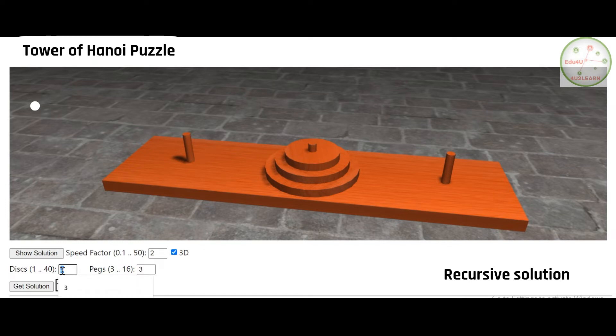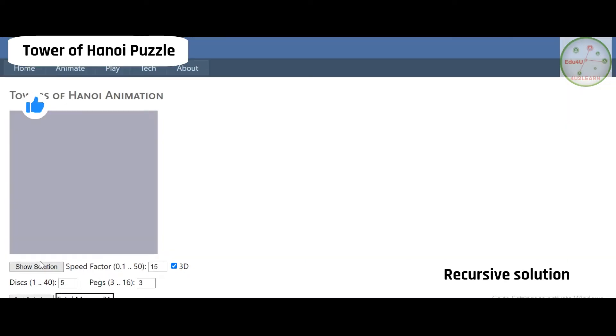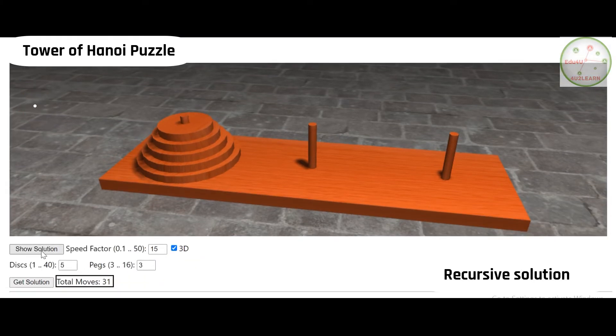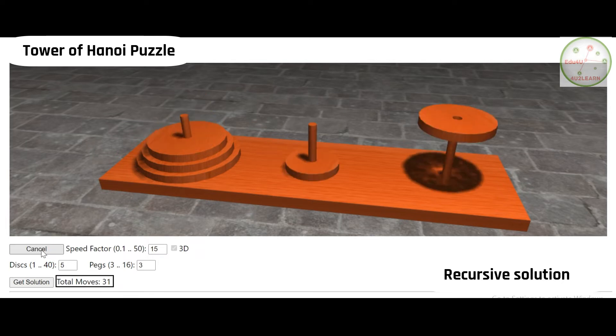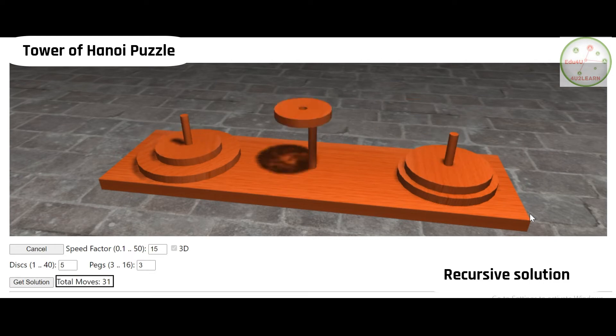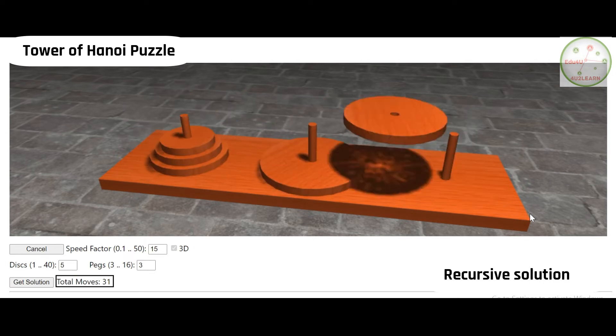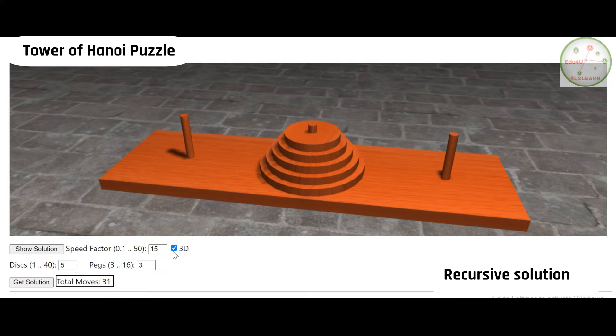Supposing if there are going to be five disks, so it is being calculated that there are going to be 31 moves. The time taken for moving five discs with the same number of pegs is going to be 31, whereas in the case of three discs it was just seven.